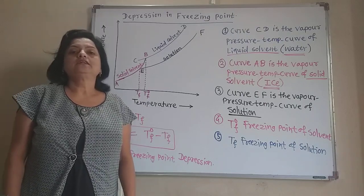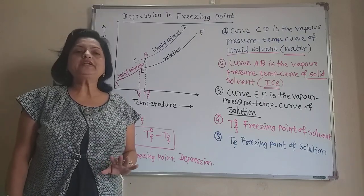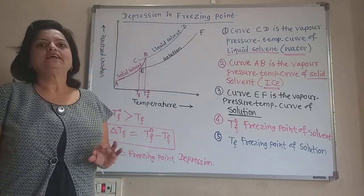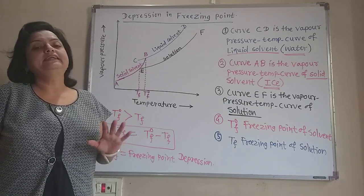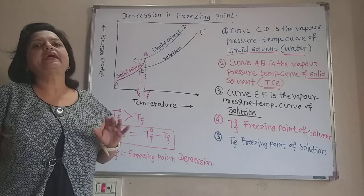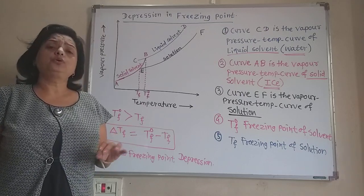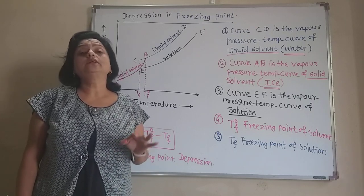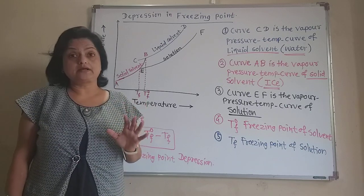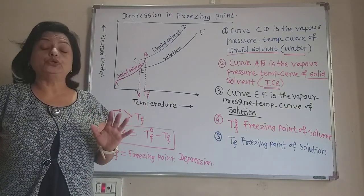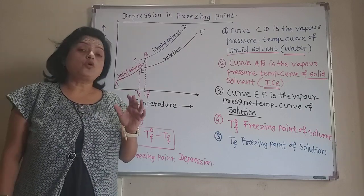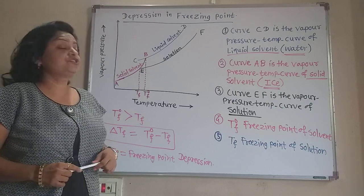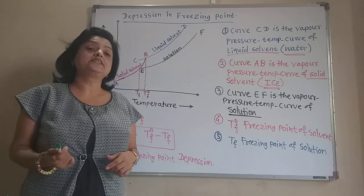Today we are seeing the third colligative property: freezing point depression. Up to yesterday, we already saw the two colligative properties, which are lowering of vapor pressure and elevation in boiling point. Colligative properties depend only on the number of solute particles and not on the nature of the solute. There are totally four colligative properties; this is the third one, depression in freezing point, and the only one remaining is osmotic pressure.